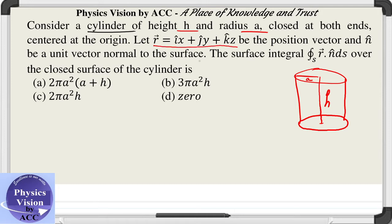to be x𝐢̂ + y𝐣̂ + z𝐤̂, and let n̂ be a unit vector normal to the surface. What we need to calculate in this question is the surface integral of r⃗ · n̂ dS over the closed surface of the cylinder.